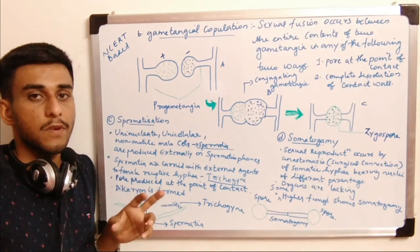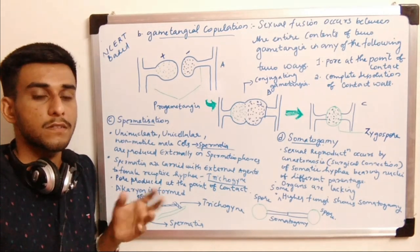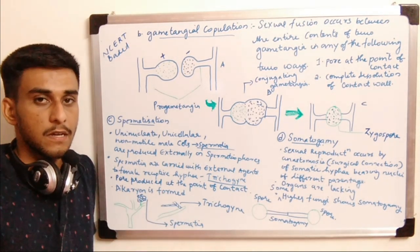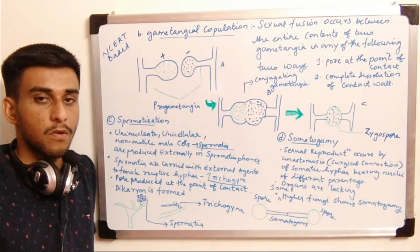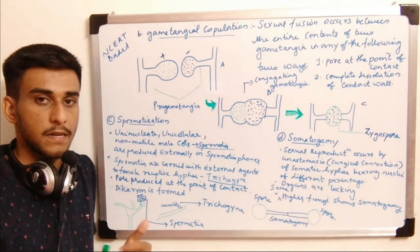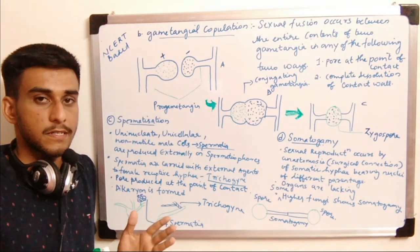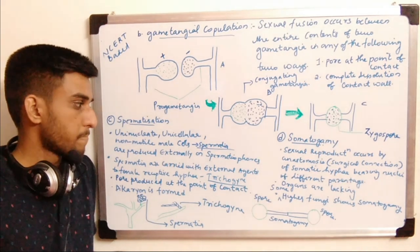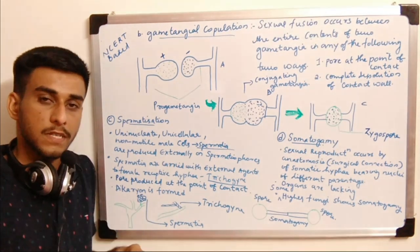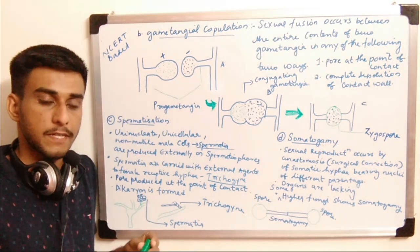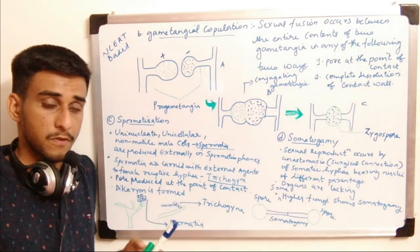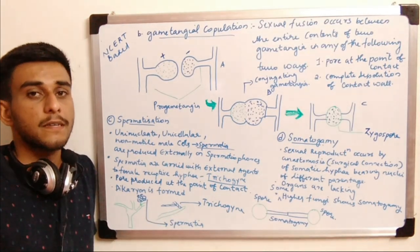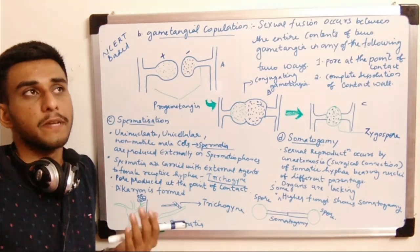A spermatophore is a stock-like structure which holds the gametes and is involved in the ejection of gametes. The spermatophores produce spermatia — the sperm cells — and they will be released.